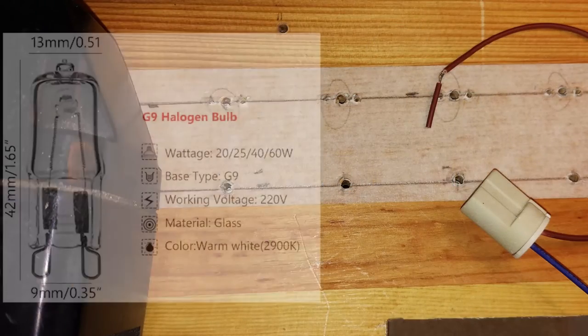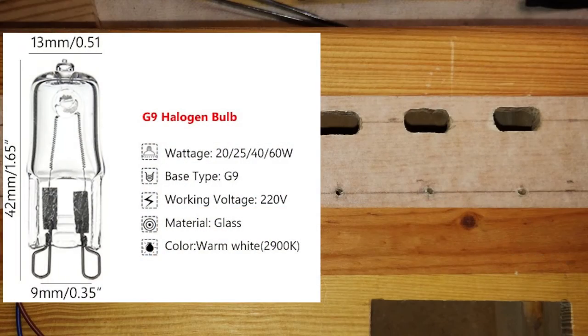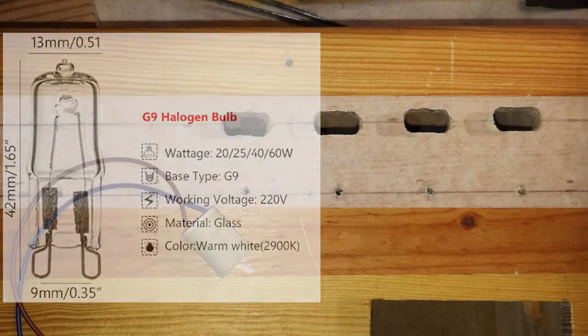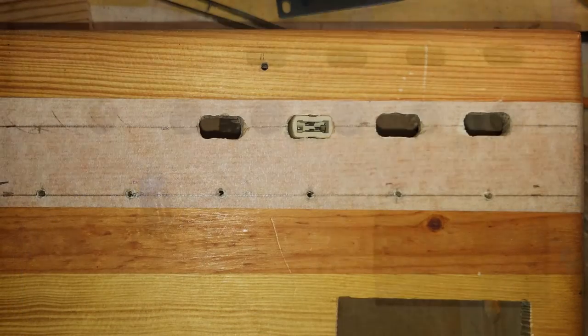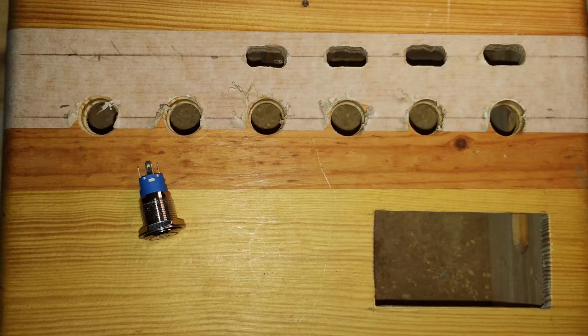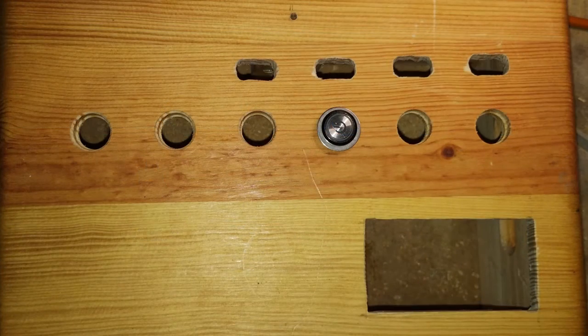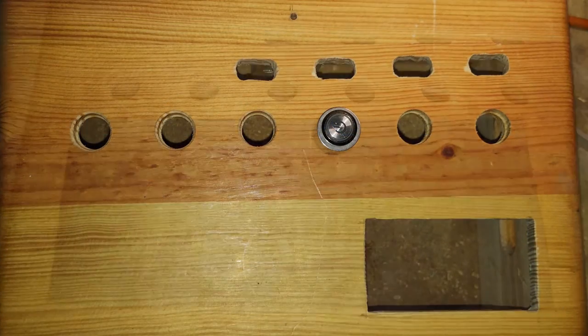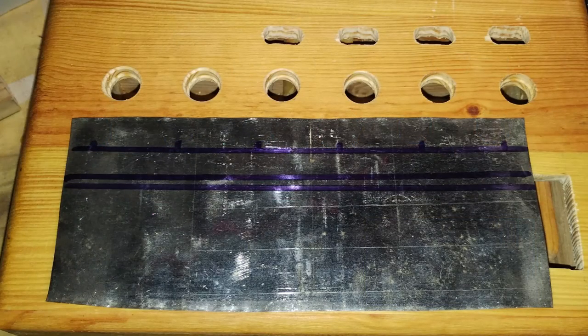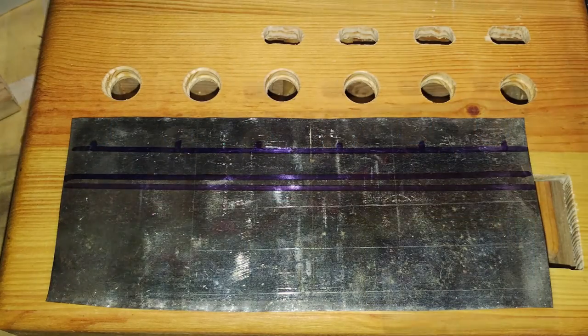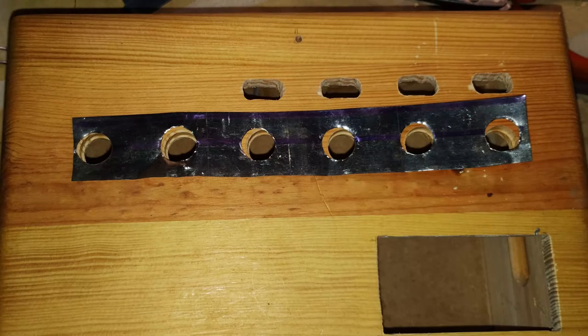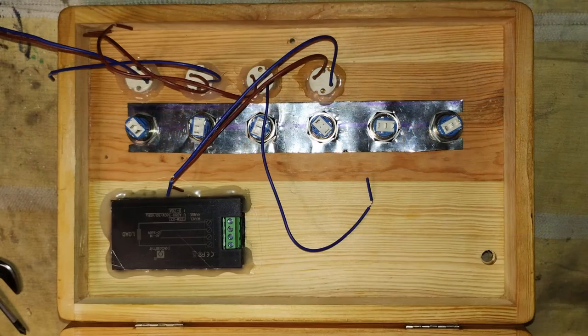The light bulbs are small halogen types, that are still fairly available from online sellers. They need only a small socket. For safety concerns, it seems a good idea to connect the metal body of all the switches to ground using a thin metal plate to be installed behind the box lid.